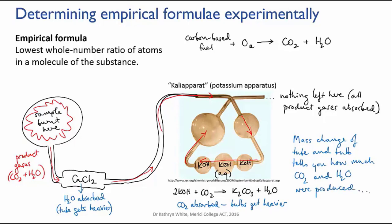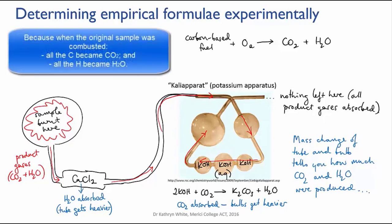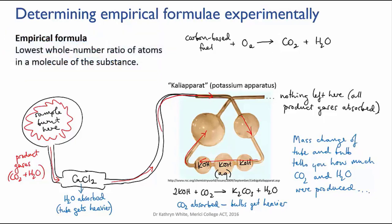Armed with these values and the mass of the original substance, the chemist could work out the percentage by mass of carbon and hydrogen in the original sample. And from this information, a simple empirical formula could be worked out. So let me show you how it's done.